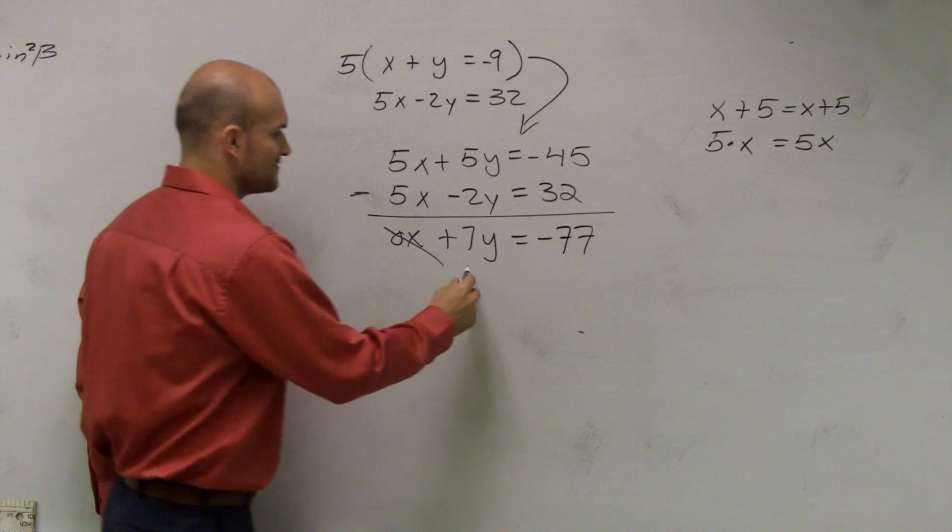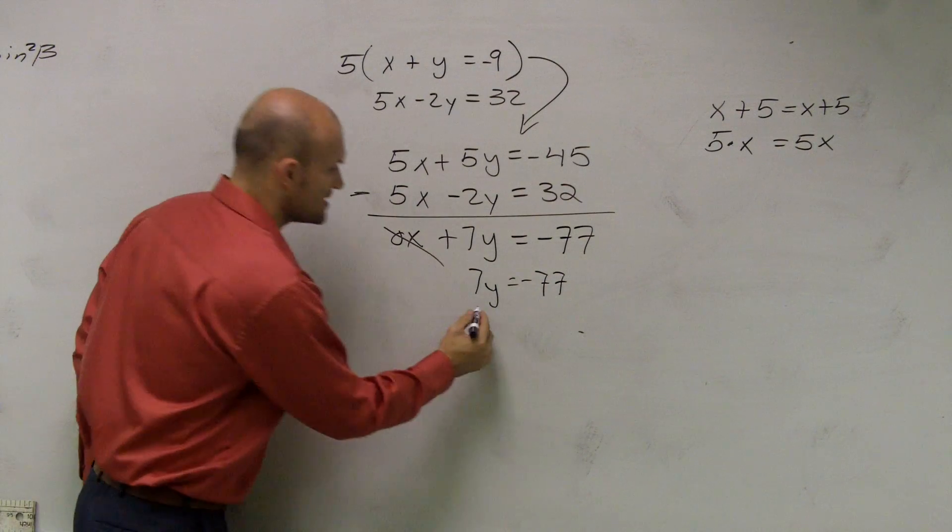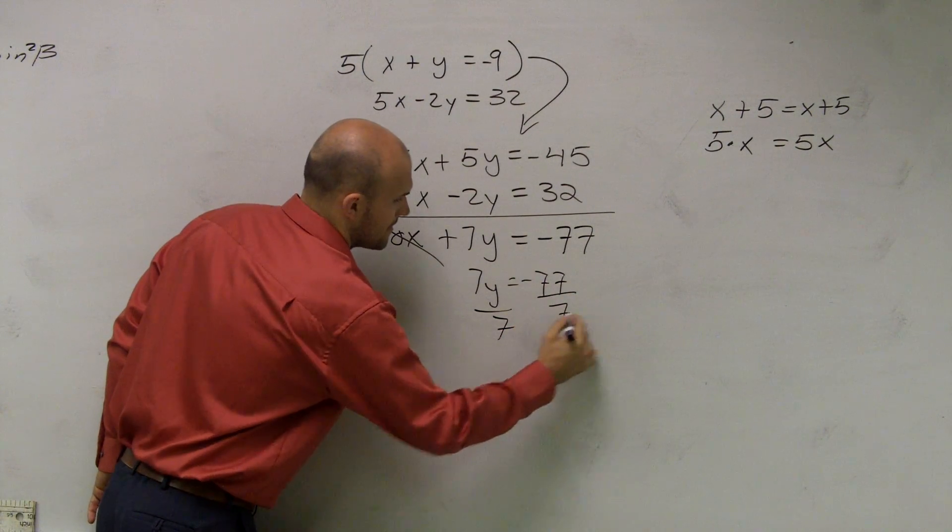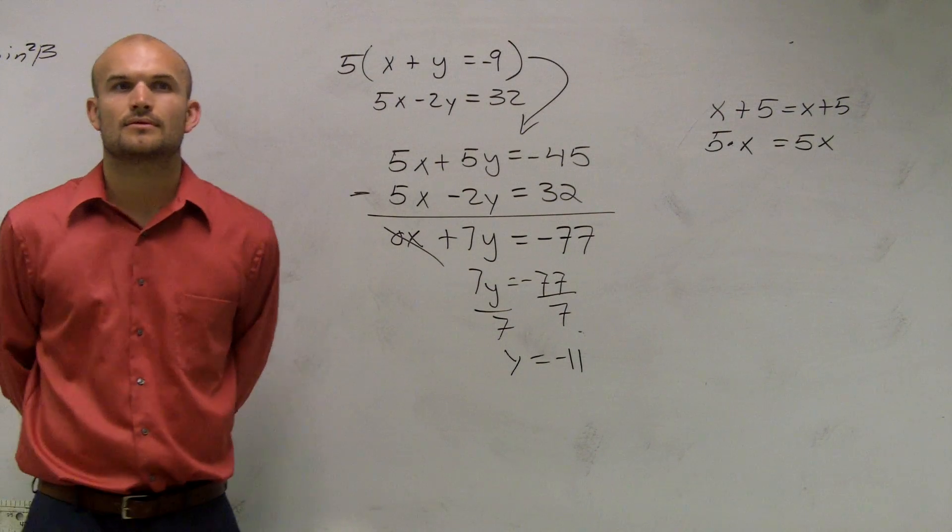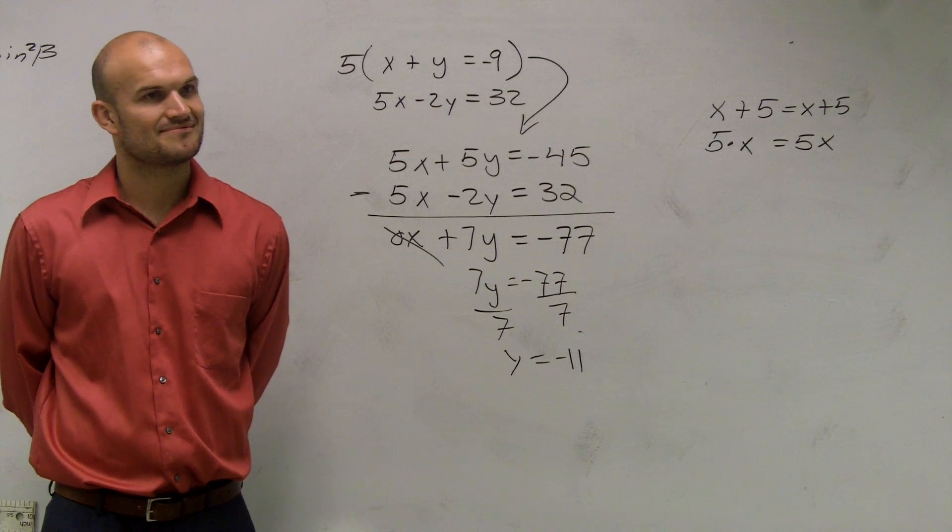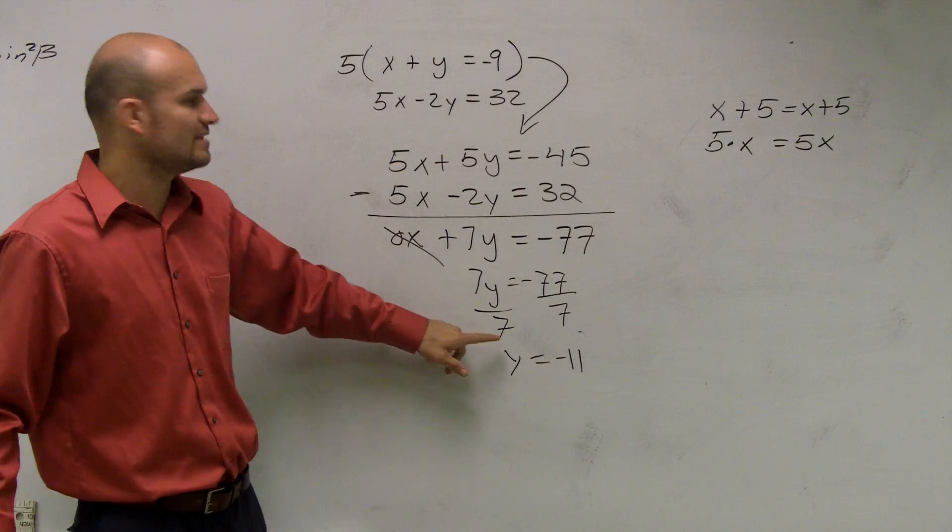So therefore, I have 7y equals negative seventy-seven. Divide by seven, y equals negative eleven. Isn't that amazing? Now I found the value of y. I just need to go back and now find the value of x.